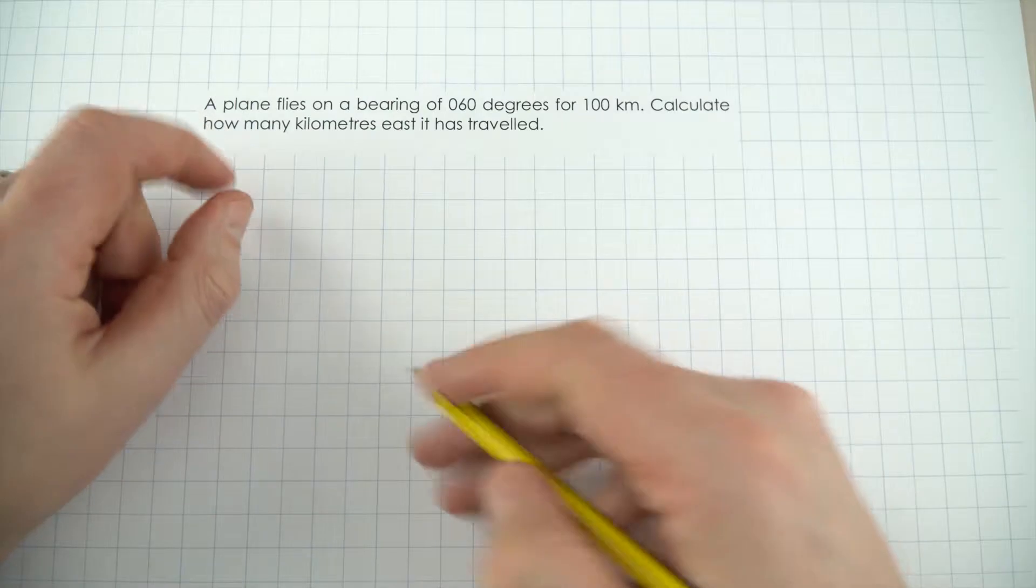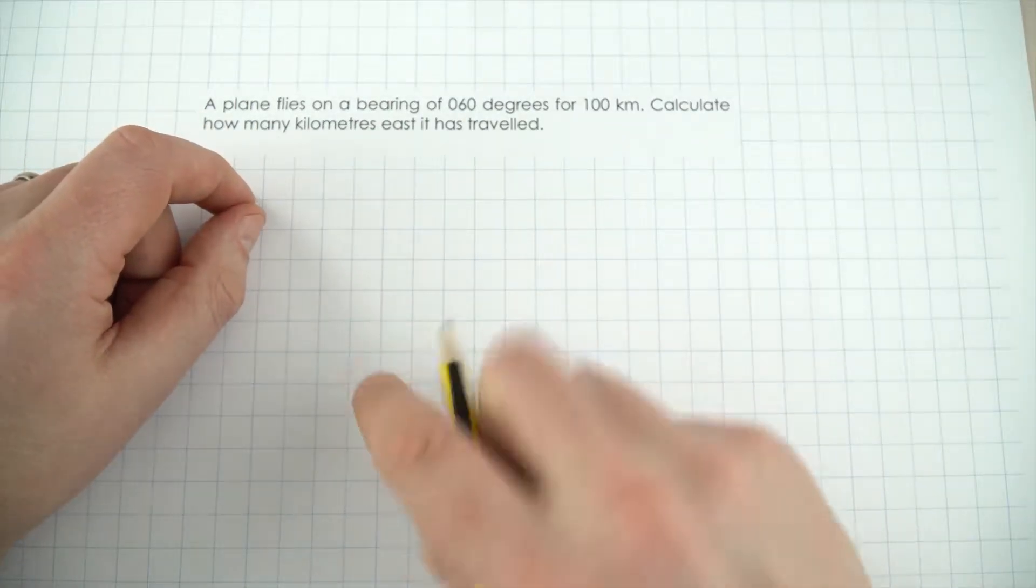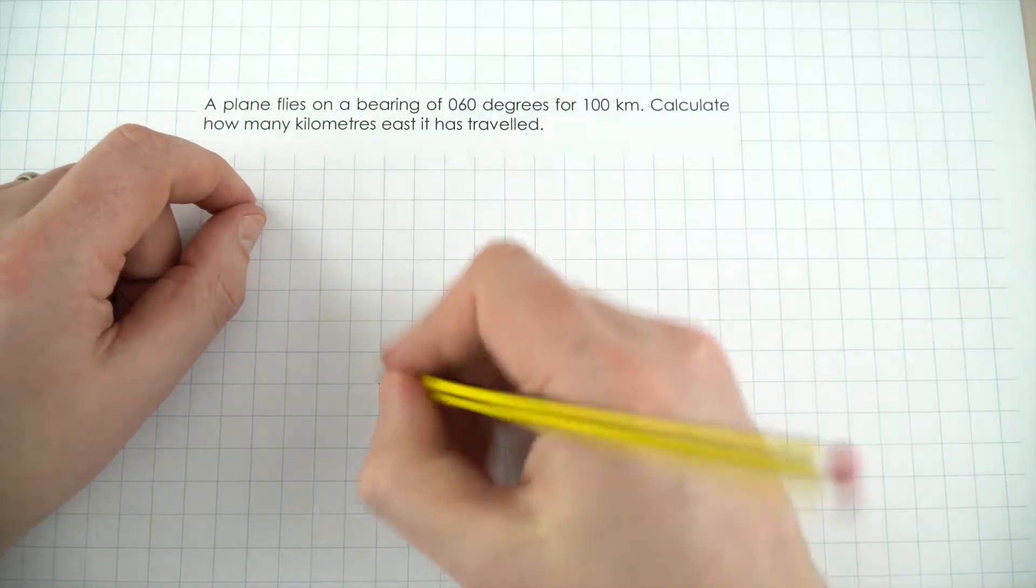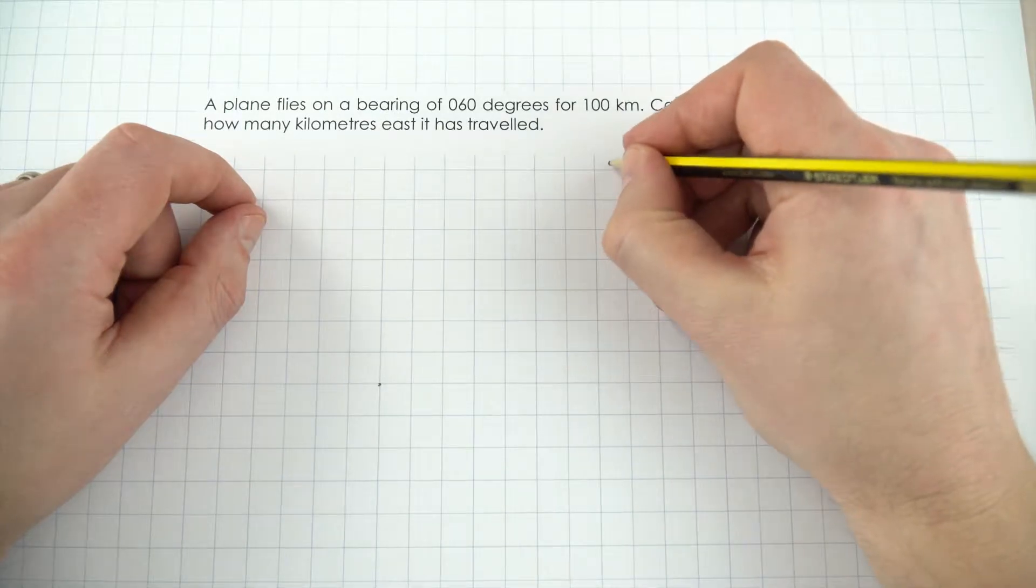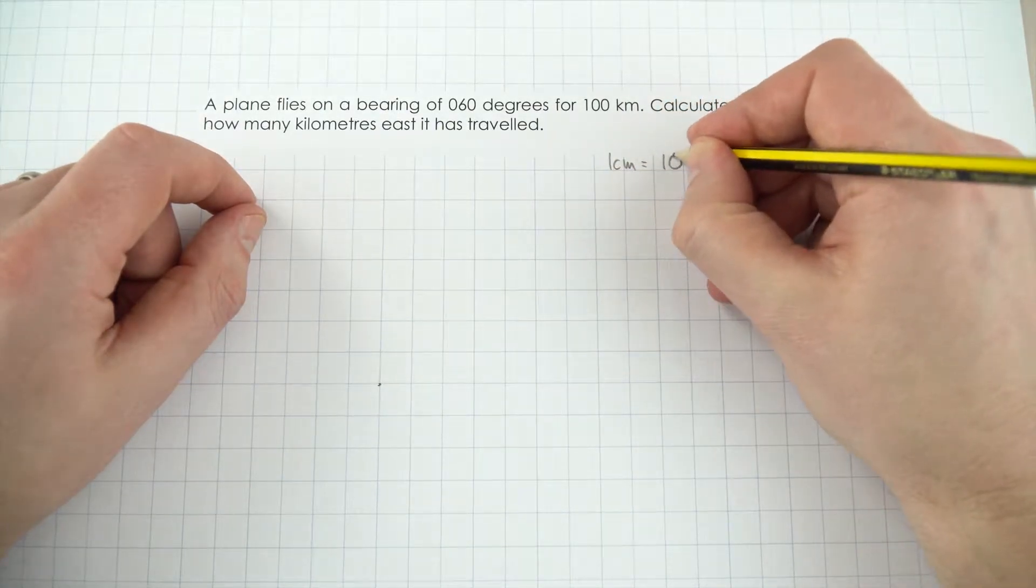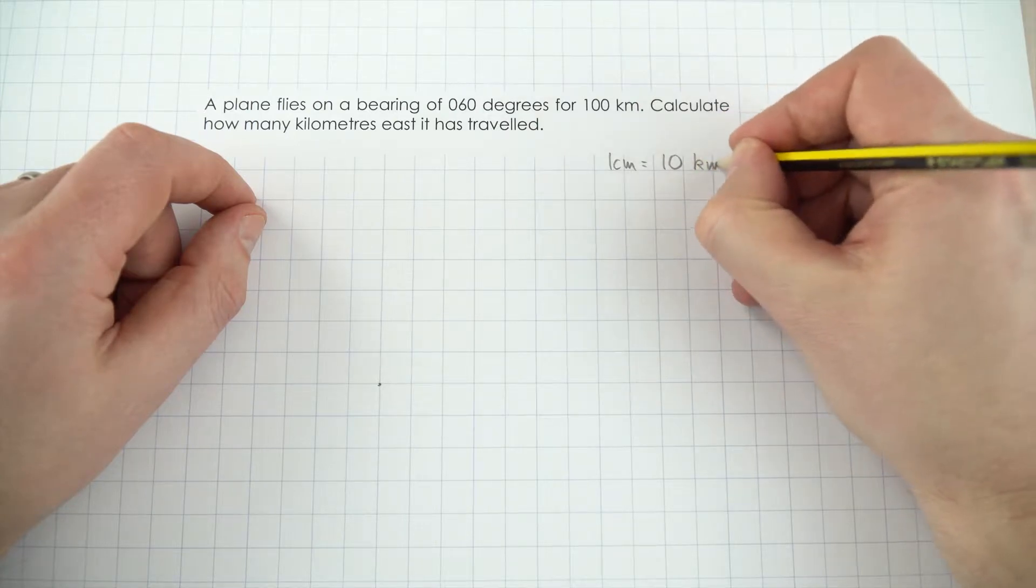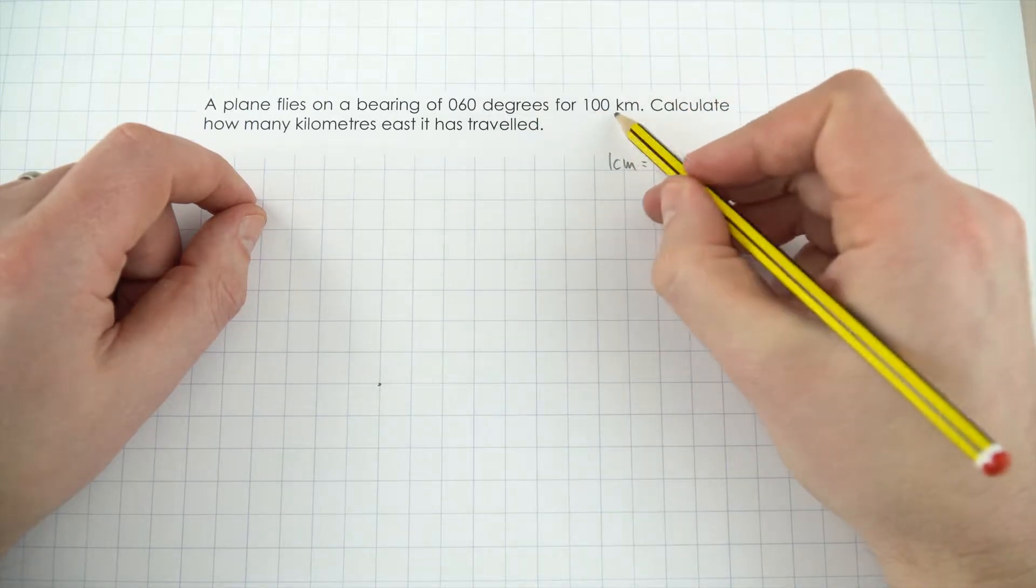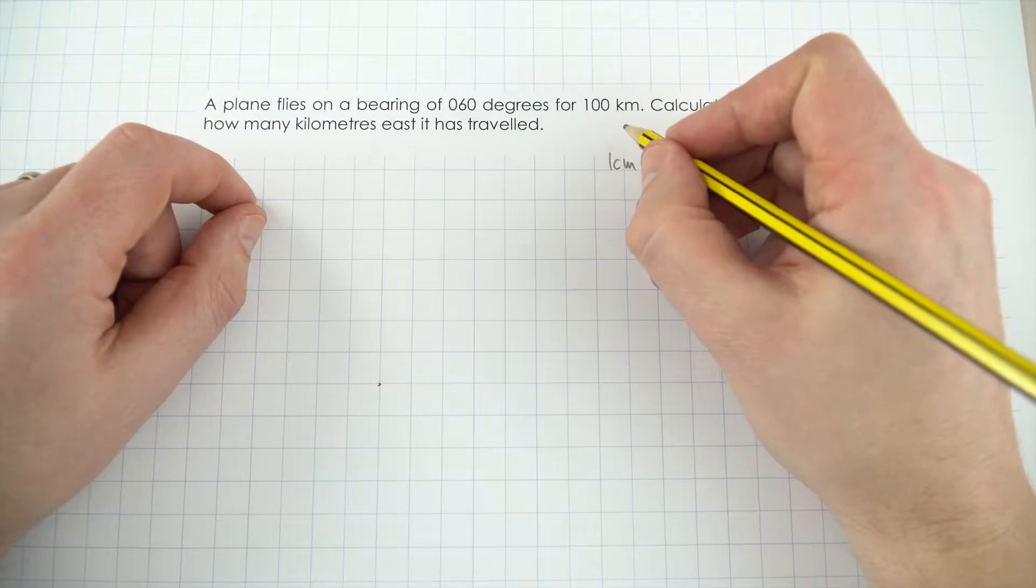I'm just going to start at this point down here, because I think this will give me enough space to do my arrow, and I'm going to say that 1cm is equal to 10km. So that means if I want to make something 100km long, it's got to be 10cm long.